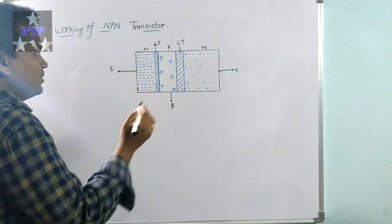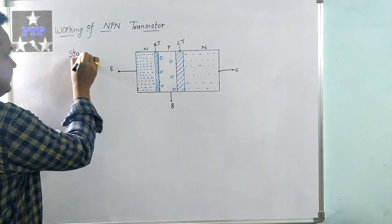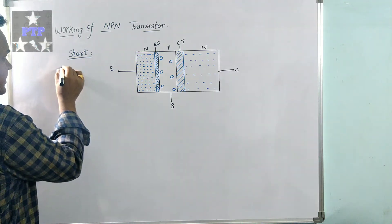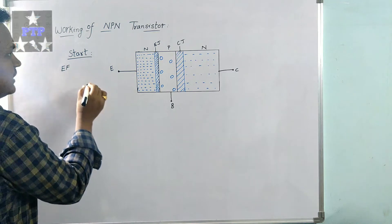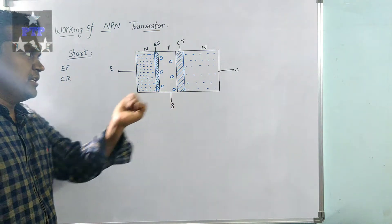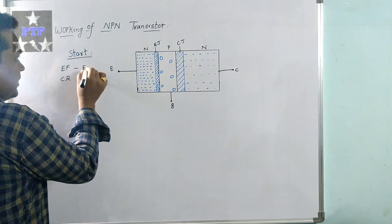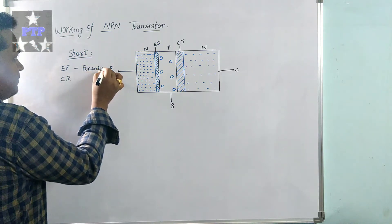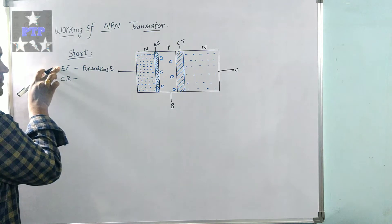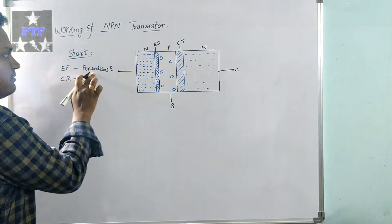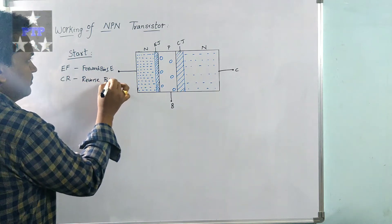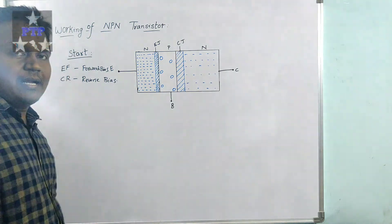To start a transistor, we have to give connections in a specific way. The transistor has two junctions: the emitter junction and the collector junction. The emitter junction should be given a forward bias, and the collector junction should be given a reverse bias. When we connect in this way, the transistor starts to work.